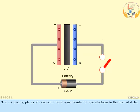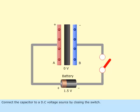Two conducting plates of a capacitor have equal number of free electrons in the normal state. Connect the capacitor to a DC voltage source by closing the switch.